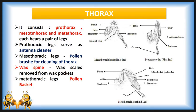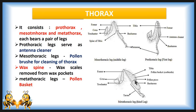The third leg is the metathoracic leg, also called the hind leg. It differs from other legs because of its larger size and broad flattened tibia and basitarsus. The flattened structure on the tibia, called the pollen basket, is used for the collection of pollen from flowers.